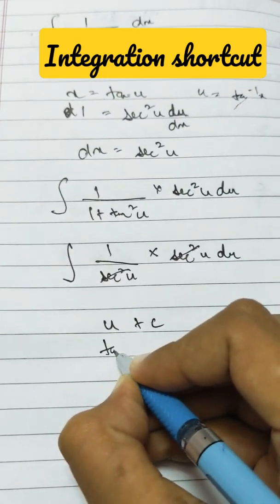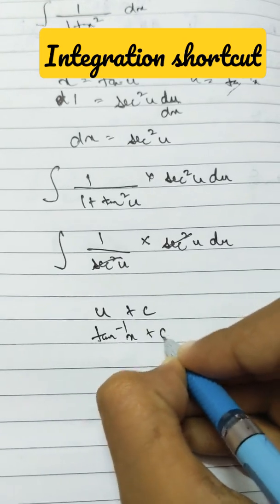And u, as we've defined, would be nothing but tan inverse x or arctan(x). So our answer is arctan(x) plus c.